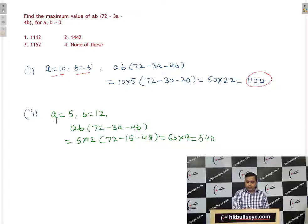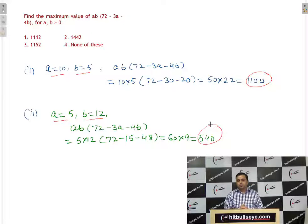If we take another set that is A equal to 5 and B equal to 12, then the value of the expression is 540. So, for different values of A and B, you are getting different values of the expression. So, do you think that this is the right way to solve this question?